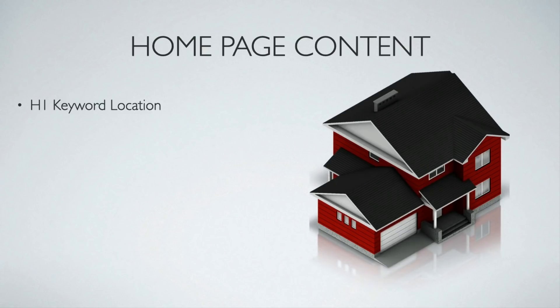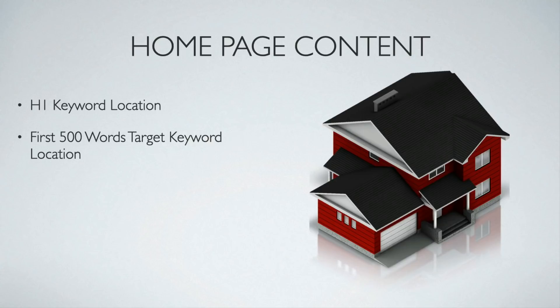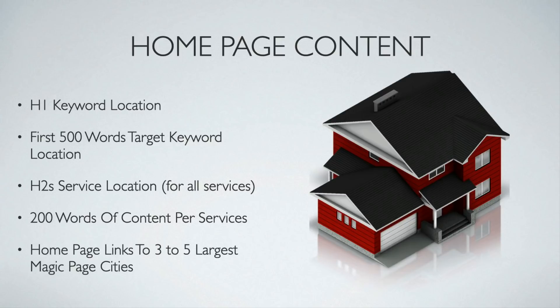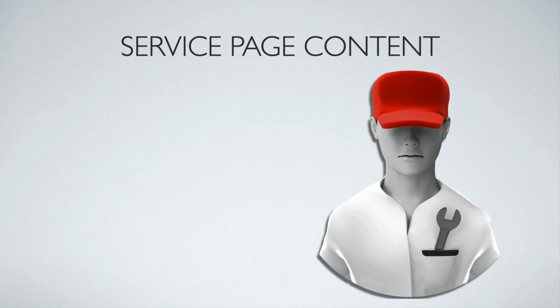Now let's look at how to write the content for these pages, starting with the home page. The H1 targets keyword plus location. The first 500 words target keyword plus location — so 'plumber in London,' 'plumbers do this in London,' etc. Then you have H2s for services plus locations — you might have five or ten of these listed on the home page. Under each H2 you're going to have 200 words of content per service. The home page only links out to the three to five largest magic page cities — that's it.